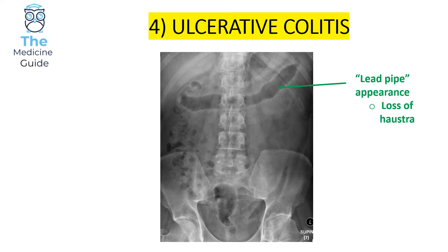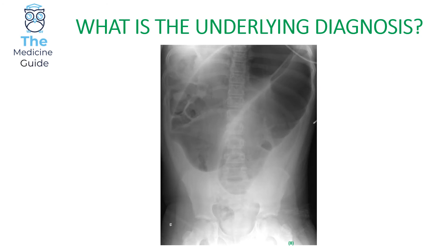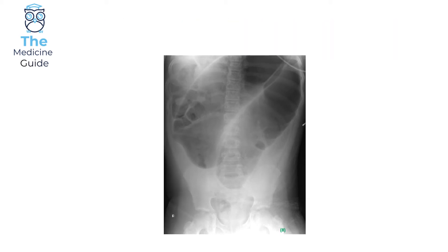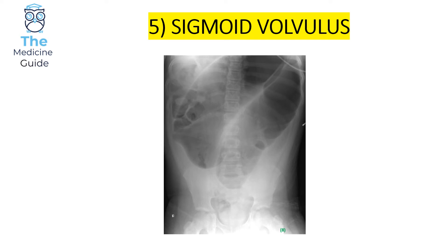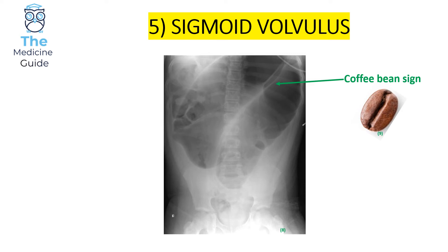Let's have a look at the next question. This is an example of a sigmoid volvulus — a very key classic question which crops up time and time again for medical school final exams and OSCEs in terms of bowel obstruction. A sigmoid volvulus classically presents on an abdominal x-ray with the coffee bean sign. That's the key classic description to remember, as it comes up repeatedly in both SBAs and clinical OSCEs.